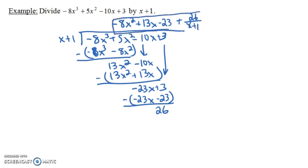So we have a remainder of 26. We can write this as plus 26 over x plus 1. That's our final answer when we divide that original cubic polynomial by x plus 1. This tells us that x plus 1 is not a factor of the original polynomial — because when we divide by x plus 1, we get a remainder of 26, not 0. We could check our answer by multiplying this whole thing by x plus 1, and we should end up getting that original polynomial.